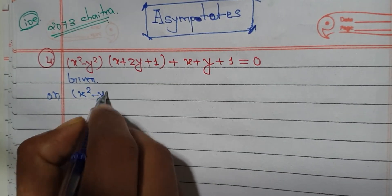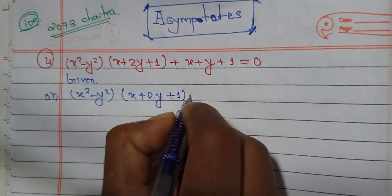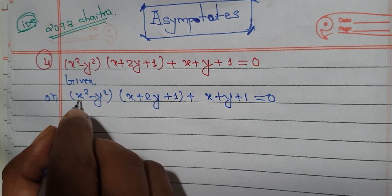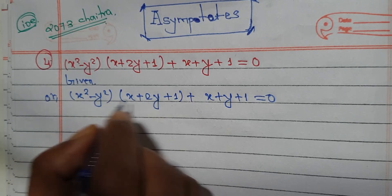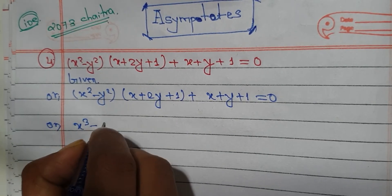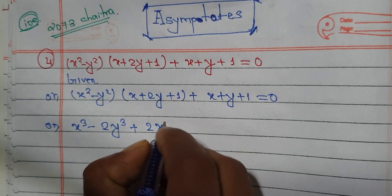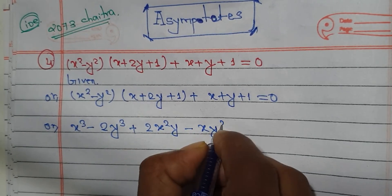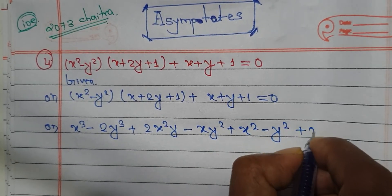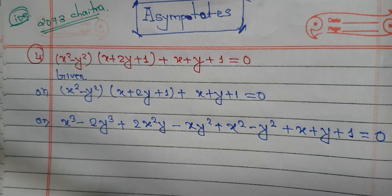x squared minus y squared, plus x plus 2y plus 1, plus x plus y plus 1 is equal to 0. We multiply to get: x squared y minus x y squared plus x squared minus y squared plus x plus y plus 1 is equal to zero.